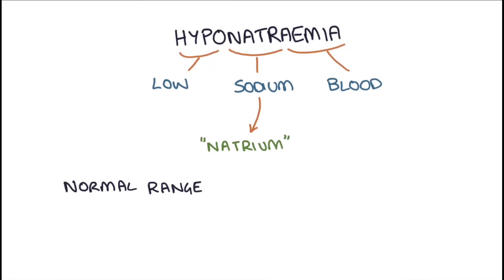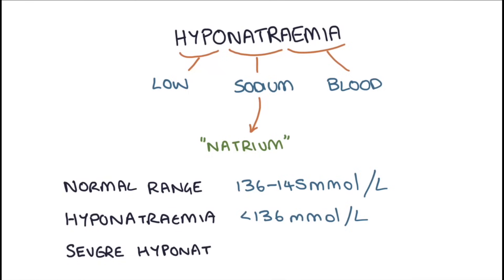The normal range for sodium is between 136 to 145 millimoles per liter. Hyponatremia is anything below 136 millimoles per liter, and severe hyponatremia is below 120 millimoles per liter.